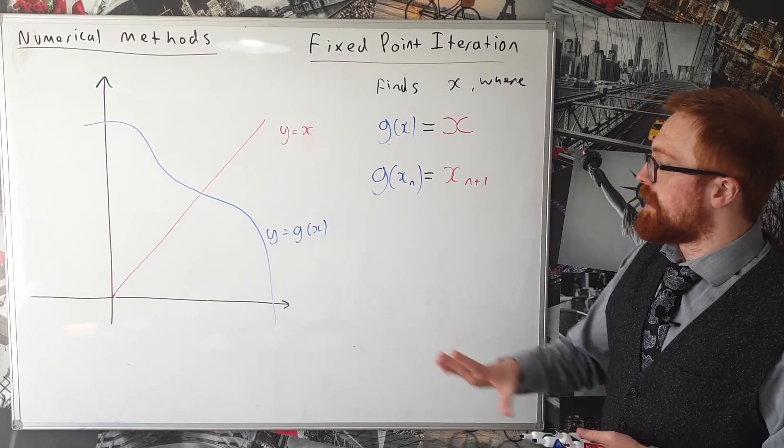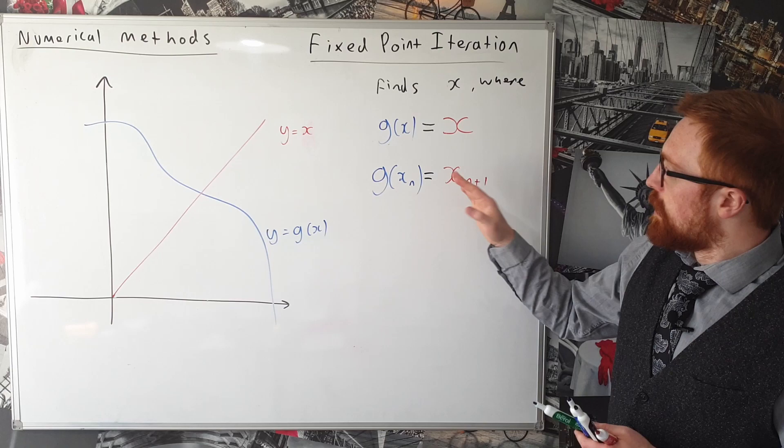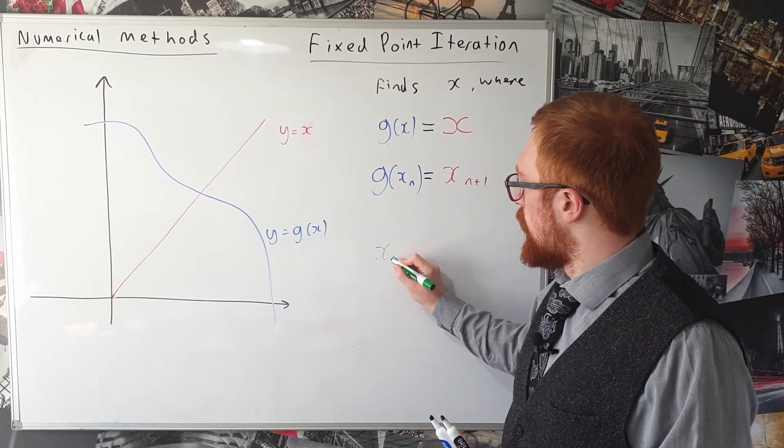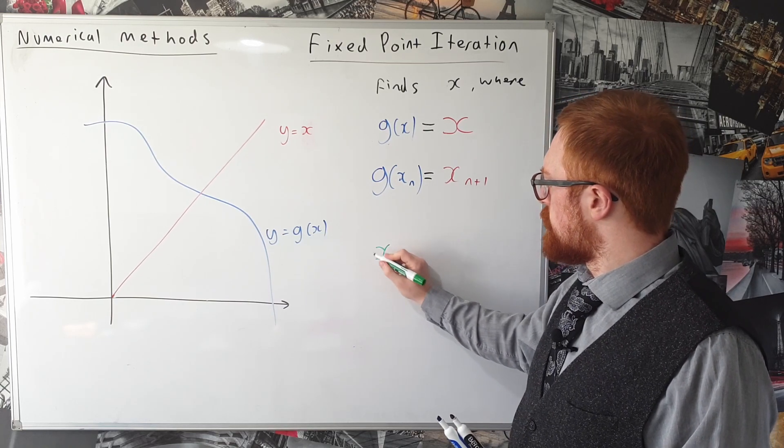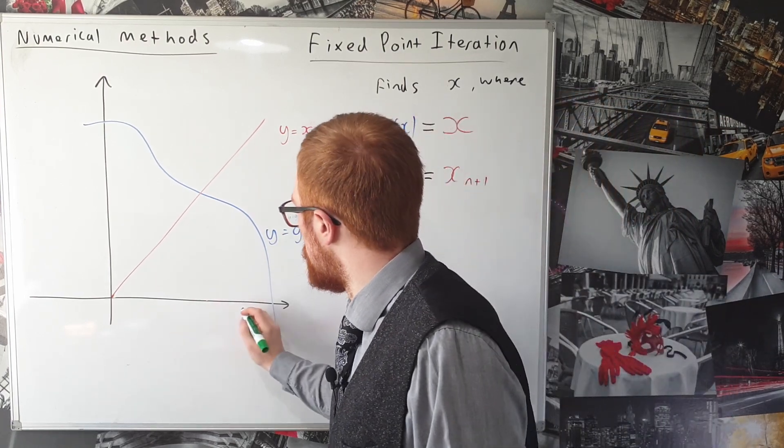Okay so let's have a look at how this looks on our diagram. So what we're going to do is we're going to pick some x value. Our first value we generally call x_0 and let's say we pick x_0 over here.